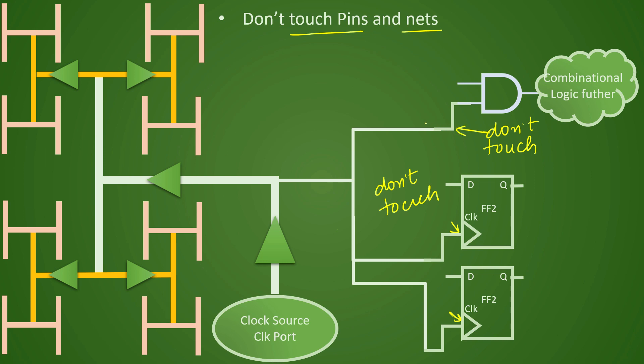So if you specify don't touch on this particular net then this portion of net which can be a segment of total nets, this particular net will not be touched for modifying the clock tree. So this is also very important that we can specify like this.